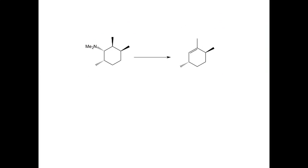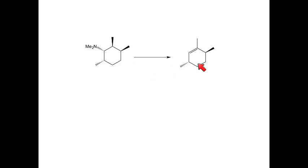For your homework, I've drawn in a tertiary amine, and I want you to form an alkene. All you need to do is list the reagents needed to convert this tertiary amine into an alkene, and obviously you have to choose the right type of elimination — either the Hoffman or the Cope — to get the correct product.